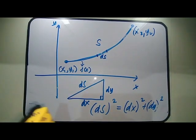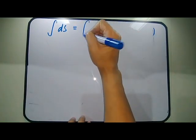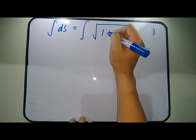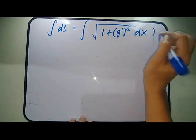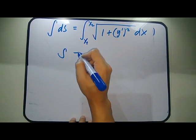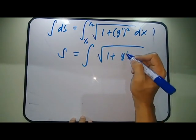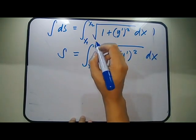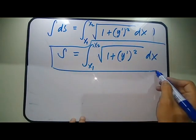Then we integrate both sides to extract S. We have the integral of dS equal to the integral of √(1 + Y′²) dX from X1 to X2. So our arc length formula is: S = ∫√(1 + Y′²) dX from X1 to X2.